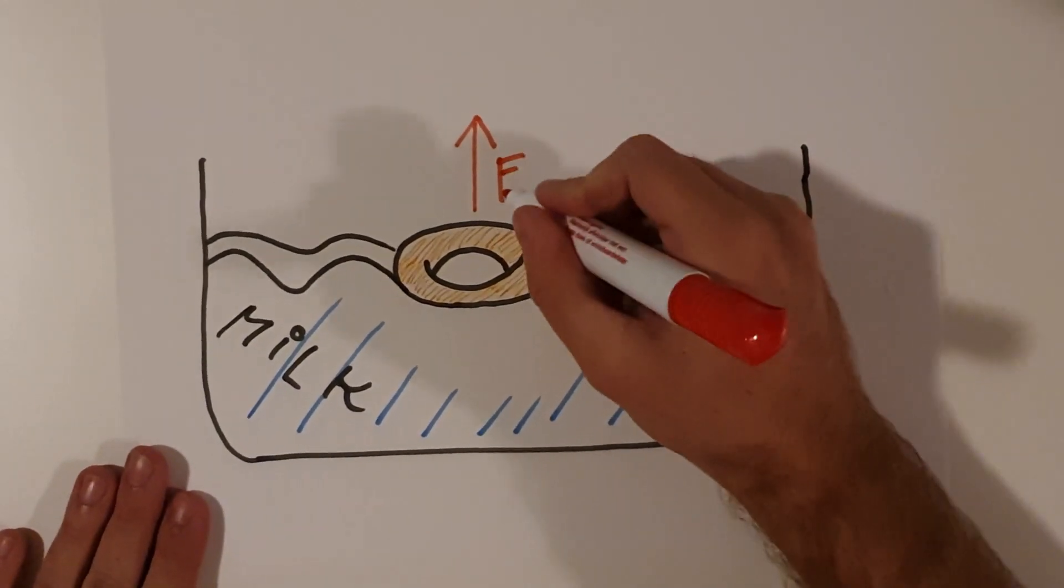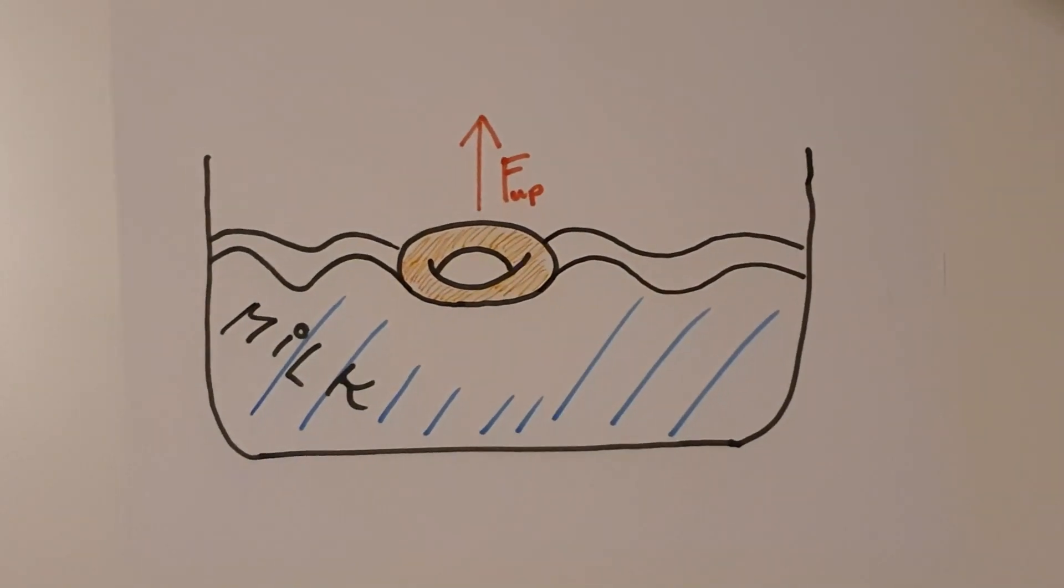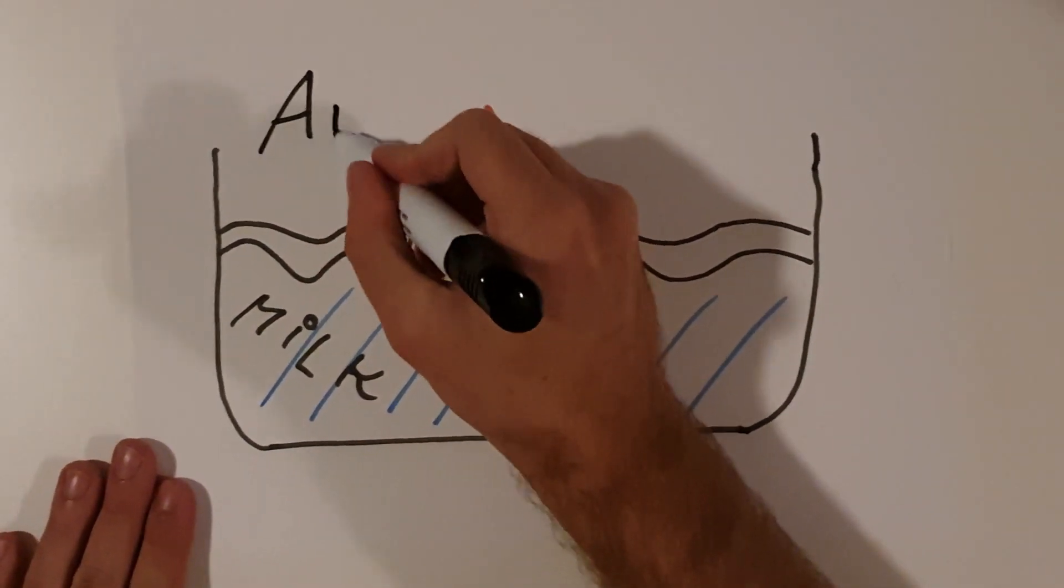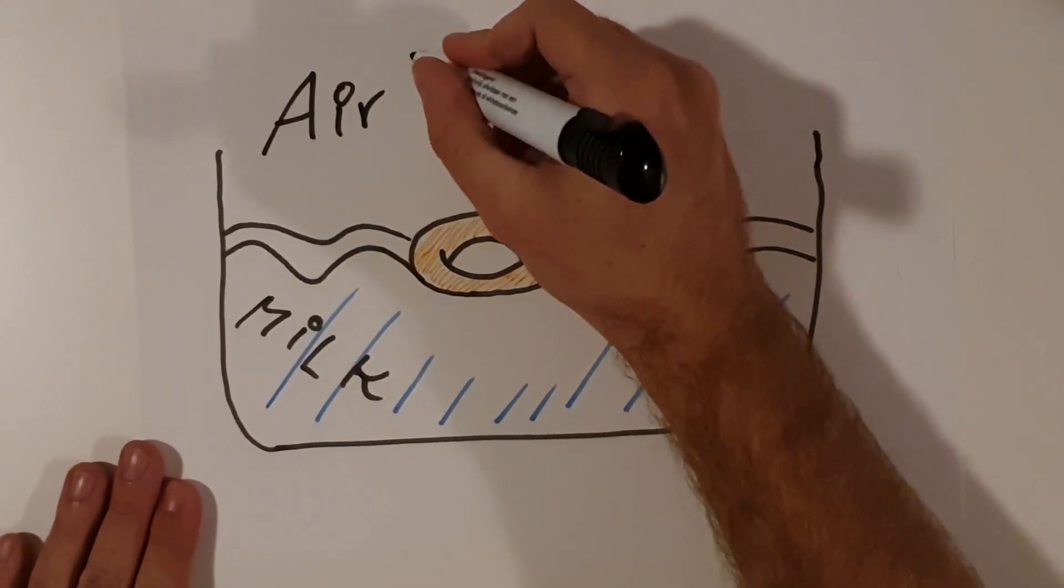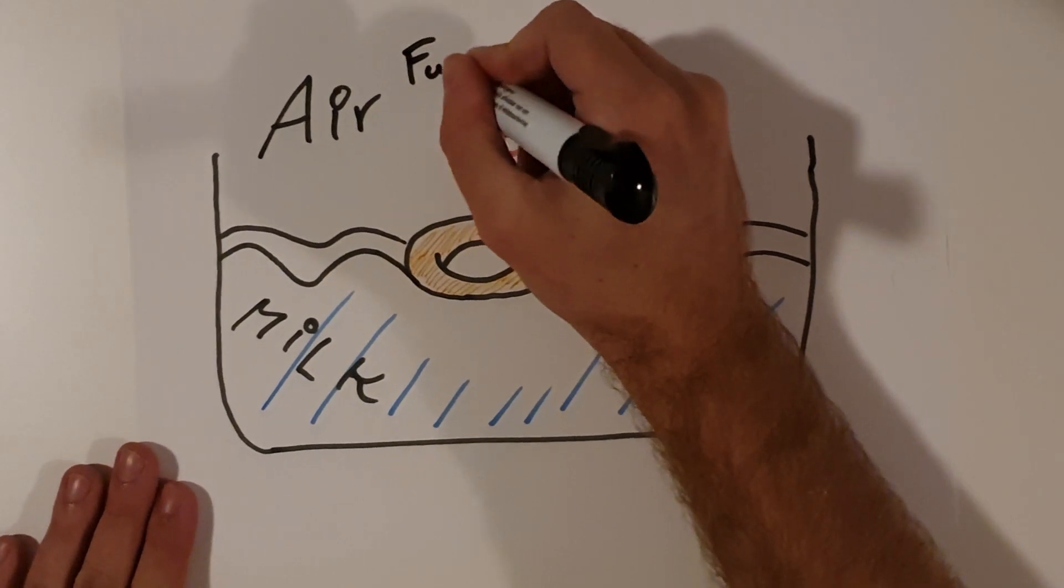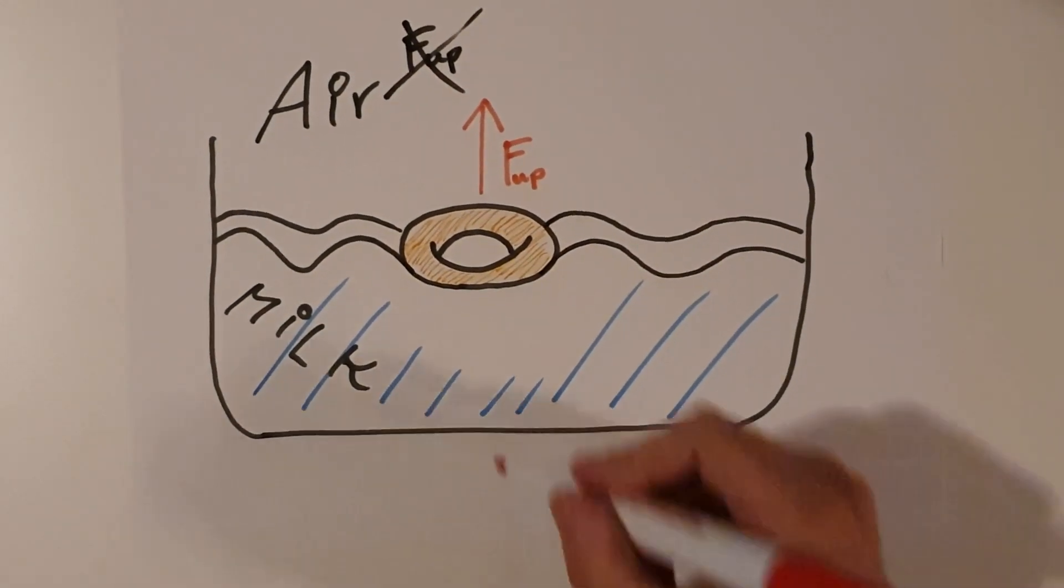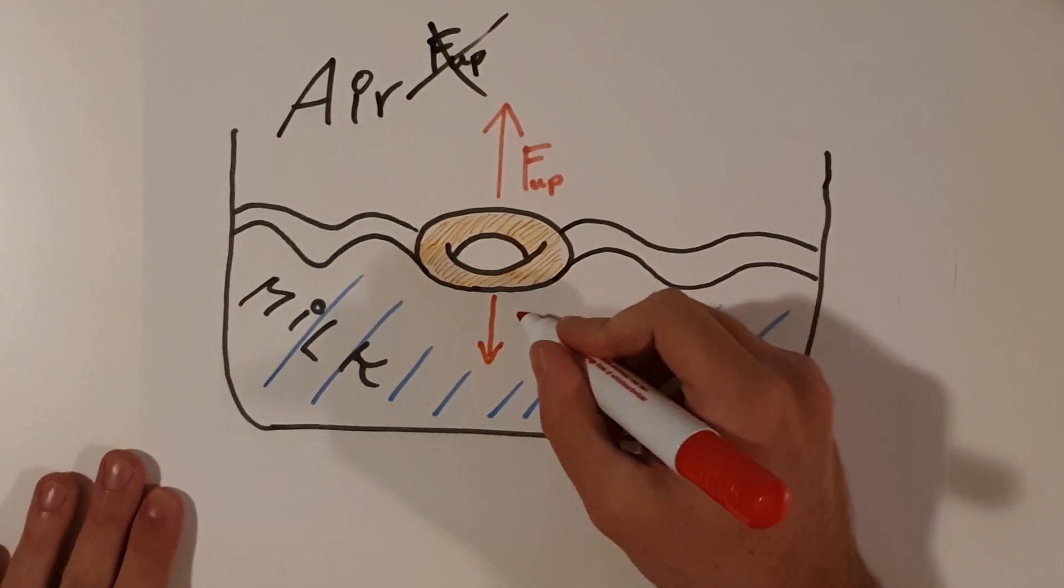Of course the Cheerios will not rise further above the surface of the milk, since air has a lower density than the Cheerios, and the air can't supply a buoyant force. So the Cheerios will float on top of the surface of the milk, where the upward buoyant force and the downward gravitational force balance out.